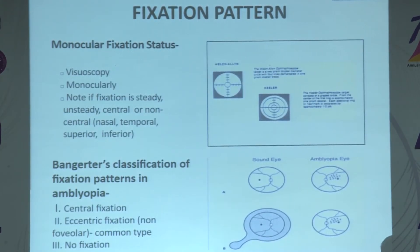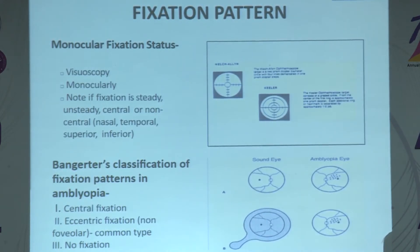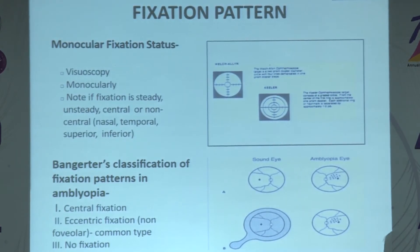The fixation pattern can be checked using a visoscope monocularly. Note whether fixation is steady or unsteady, and central or non-central. This is classified into central fixation, eccentric fixation, non-foveal fixation, or no fixation at all.